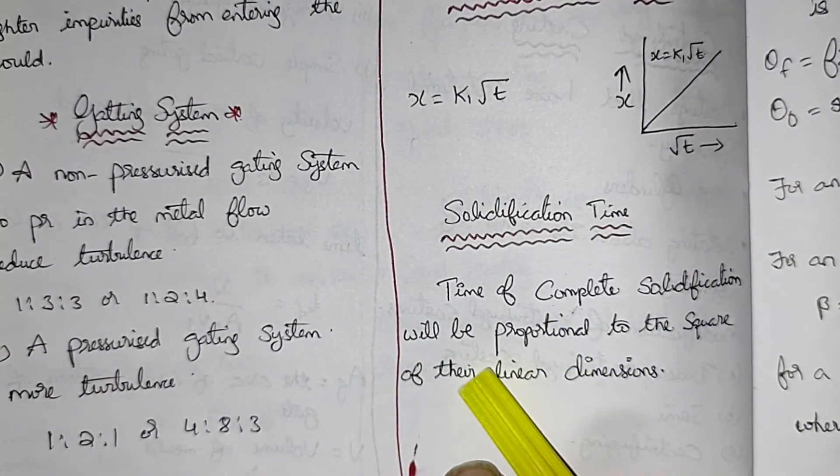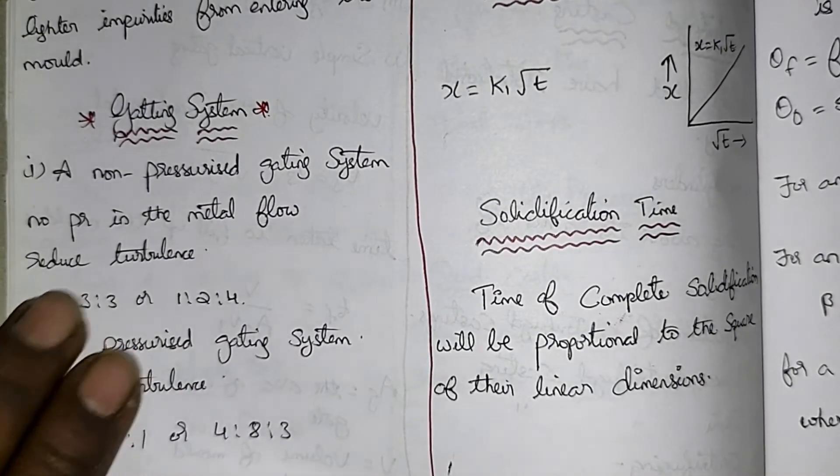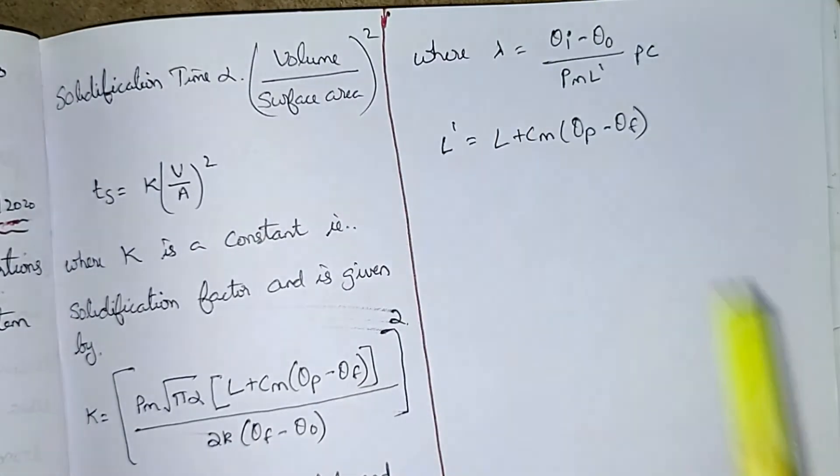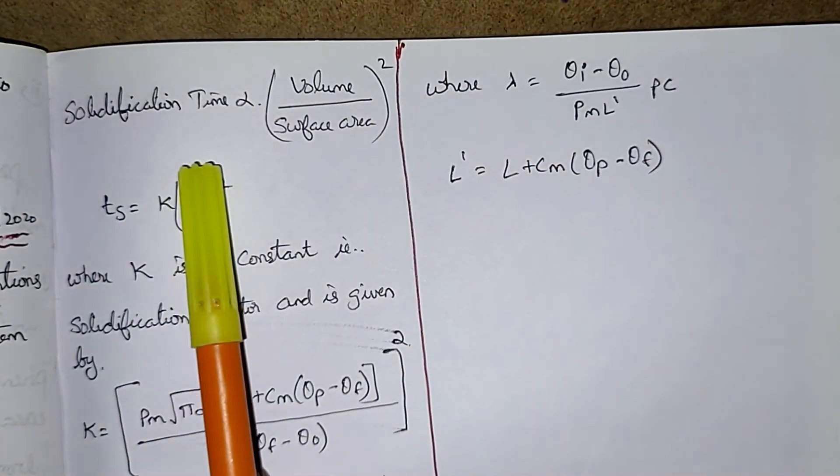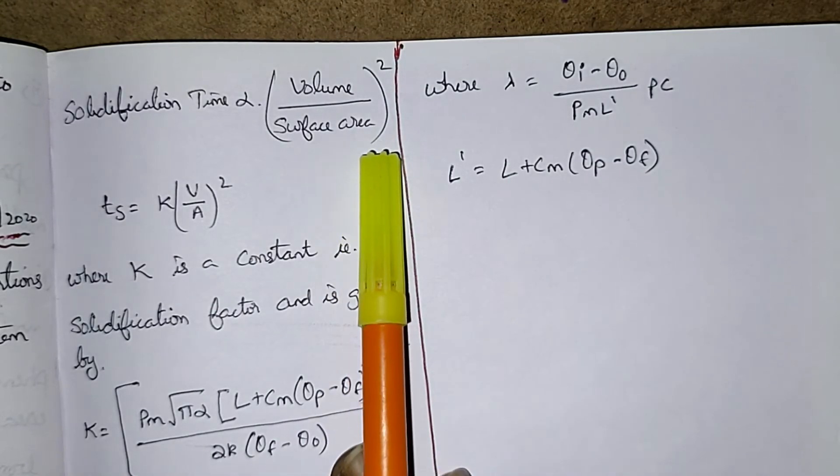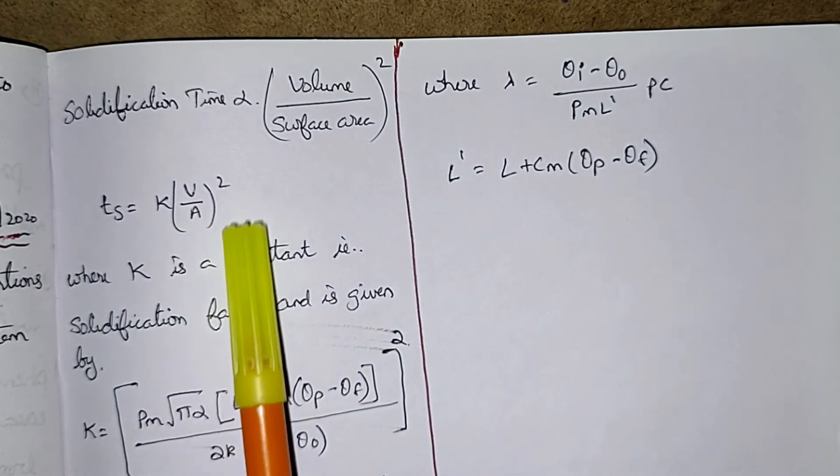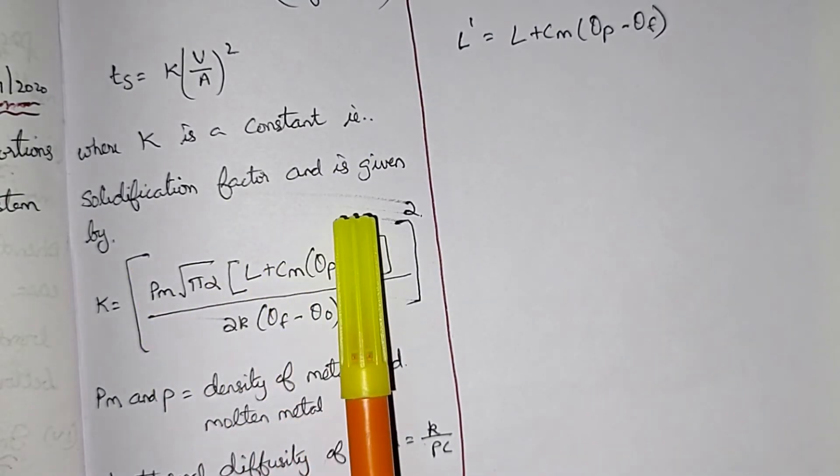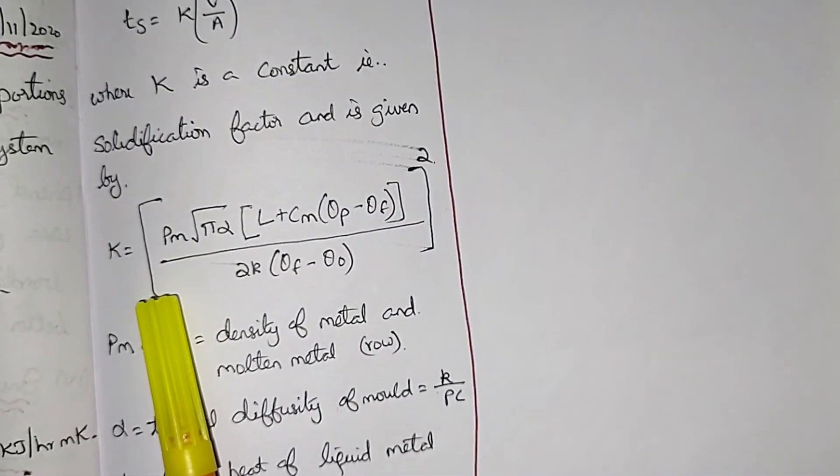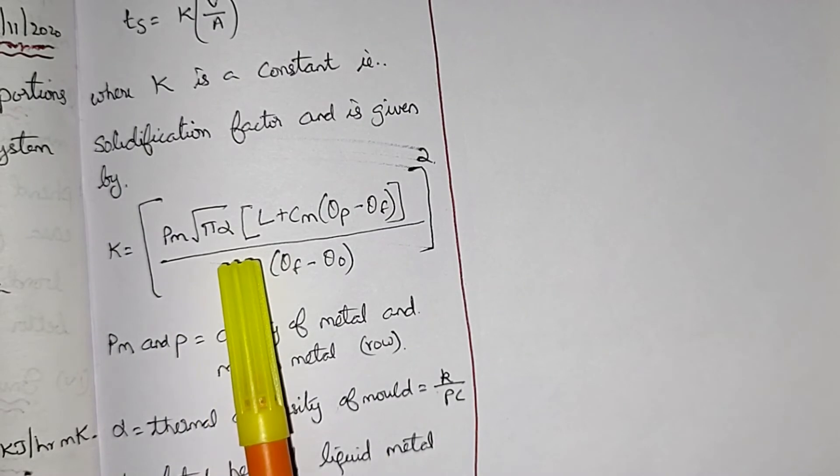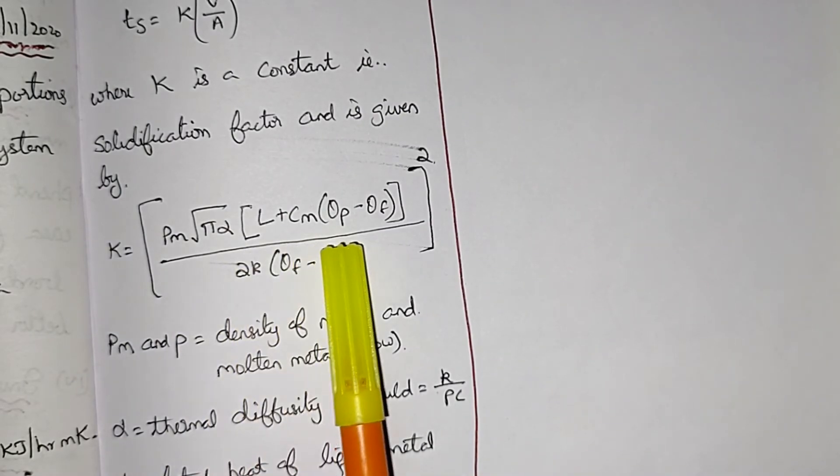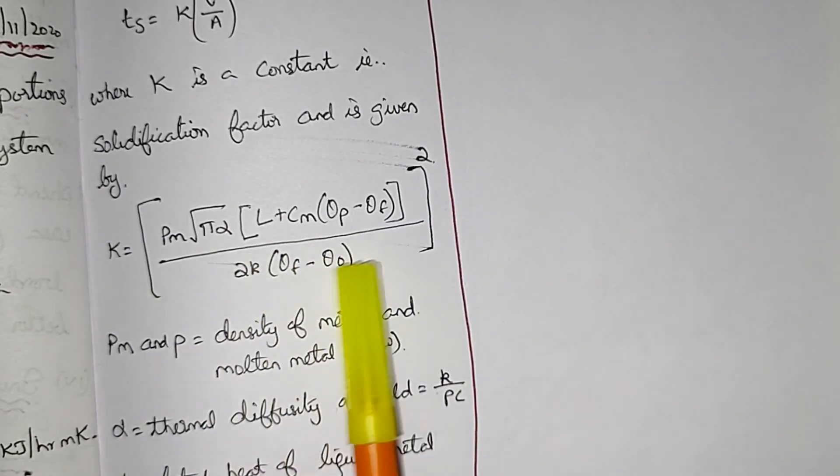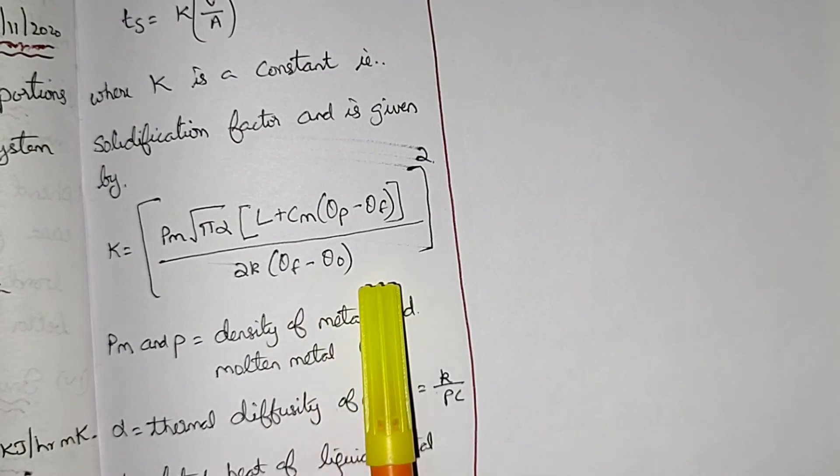Time of complete solidification will be proportional to the square of the linear dimensions. Solidification time alpha volume by surface area square. So t is equal to k into (v by a) squared, where k is a constant that is solidification factor. And is given by k is equal to ρm root π*α into (L plus cm into (θp minus θf)) by 2k into (θf minus θ0) whole square.